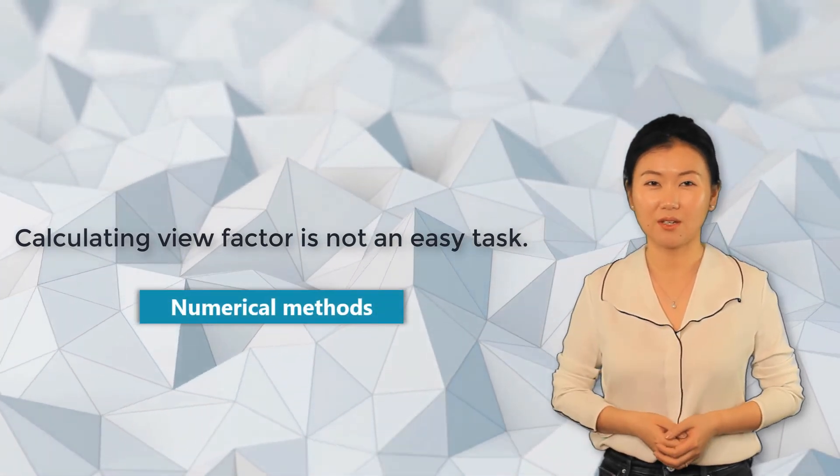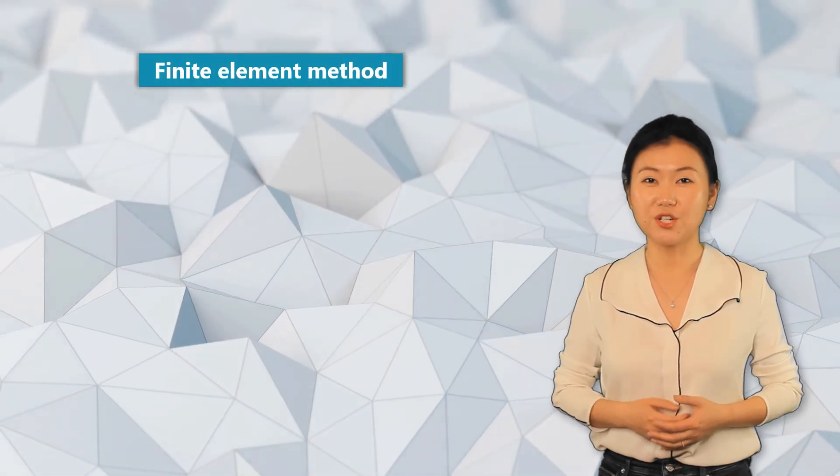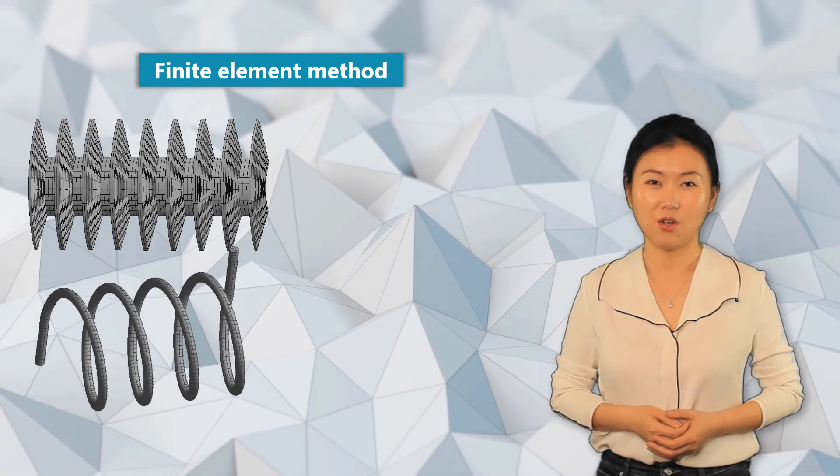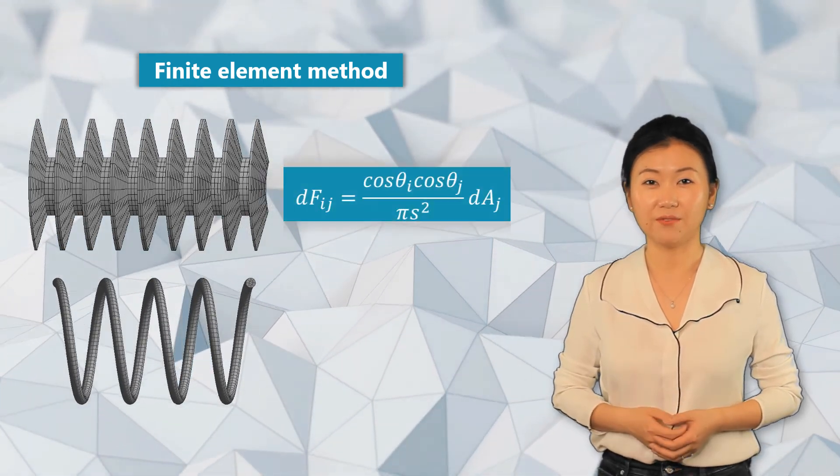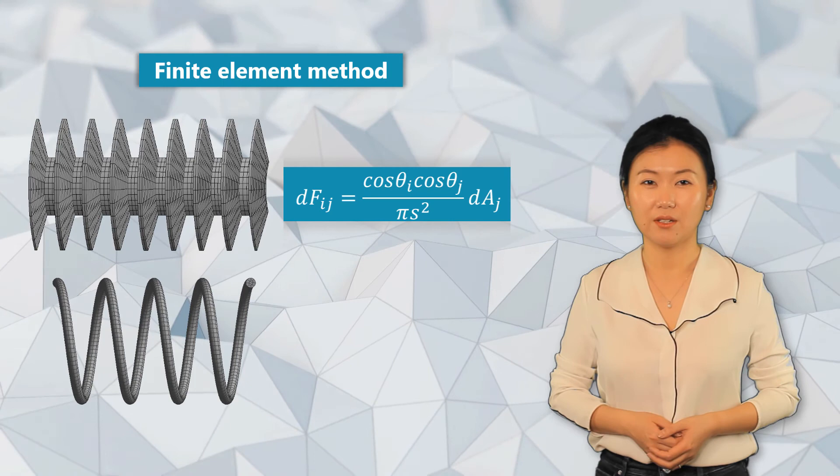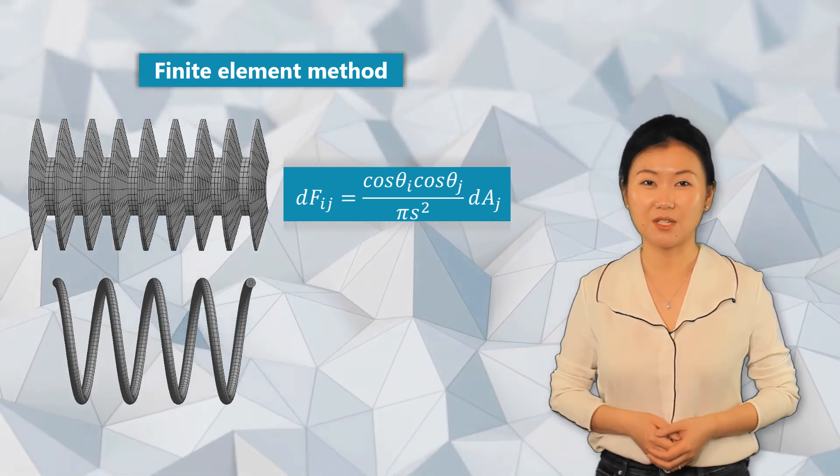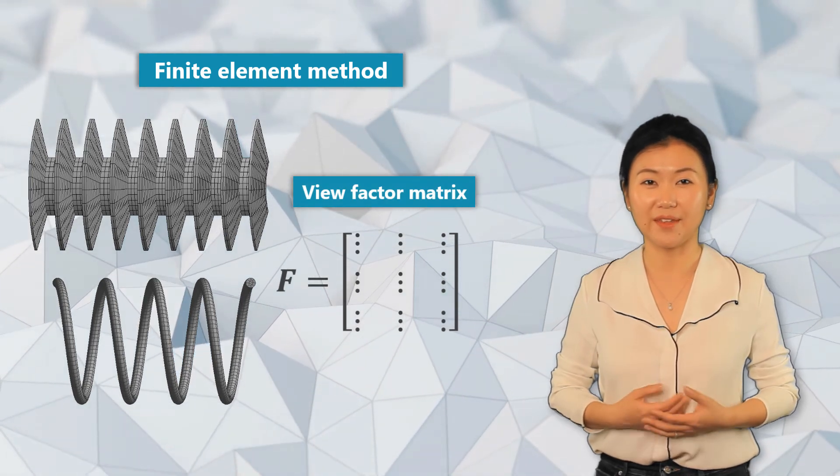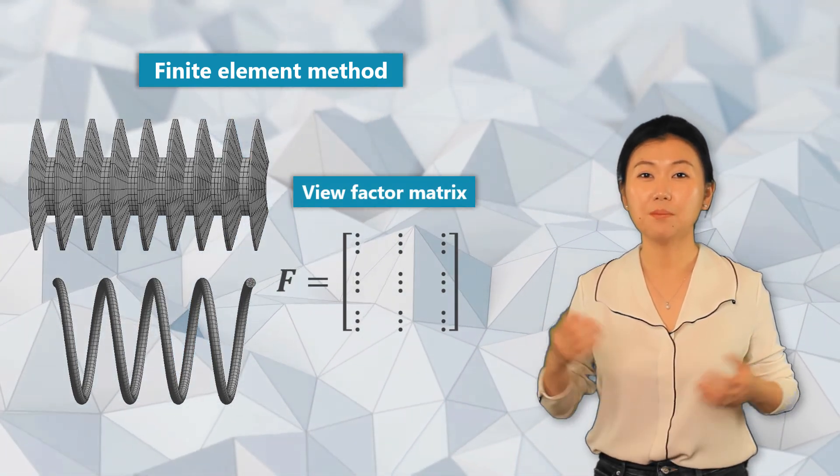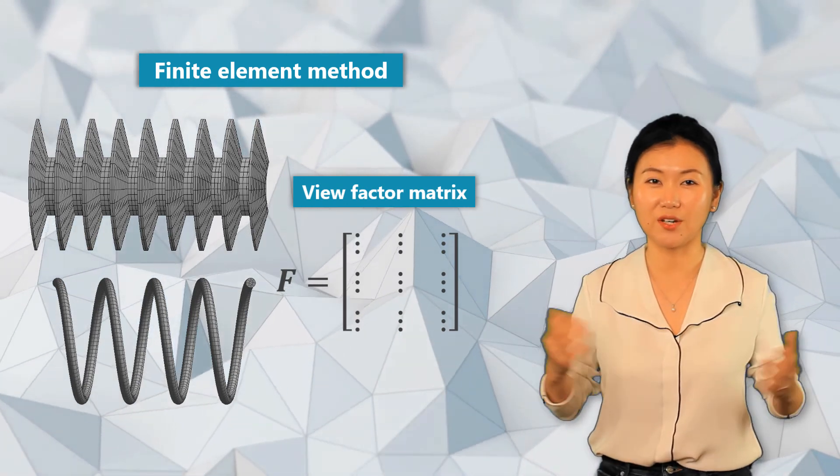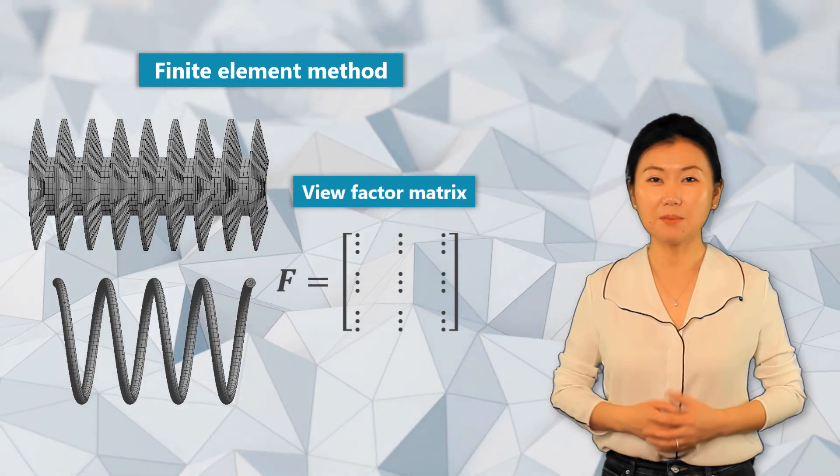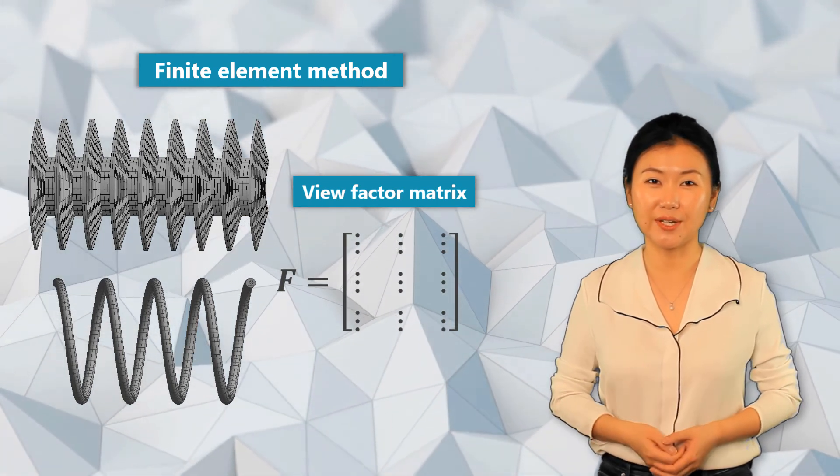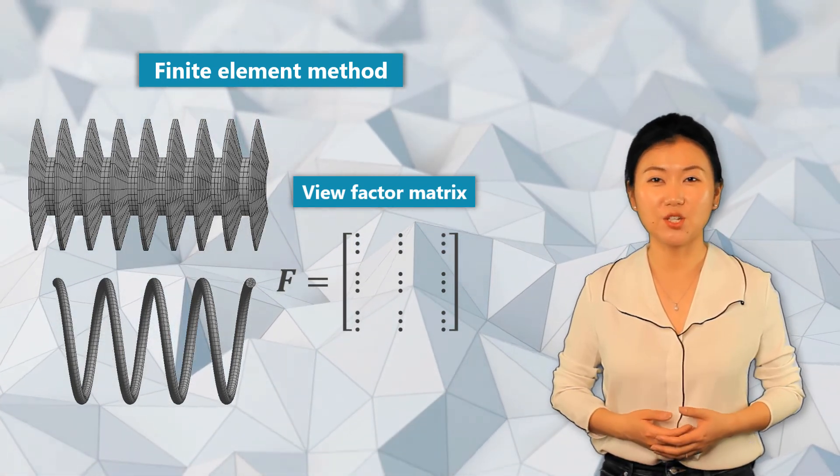By the finite element method, an arbitrary geometry is discretized to a number of elements. For each element face involved in radiation, view factors are calculated. So if there are a thousand element surfaces involved in radiation, the view factor matrix will be a thousand by a thousand. Thus computer simulation is ideal for such complex calculations. The finite element solver will then use this view factor matrix to calculate the incident radiative flux from one face to other faces.